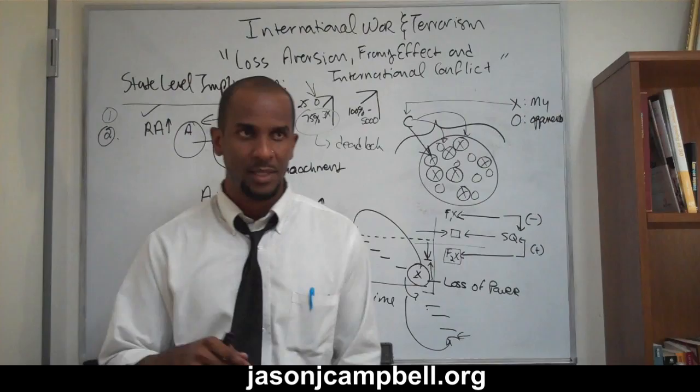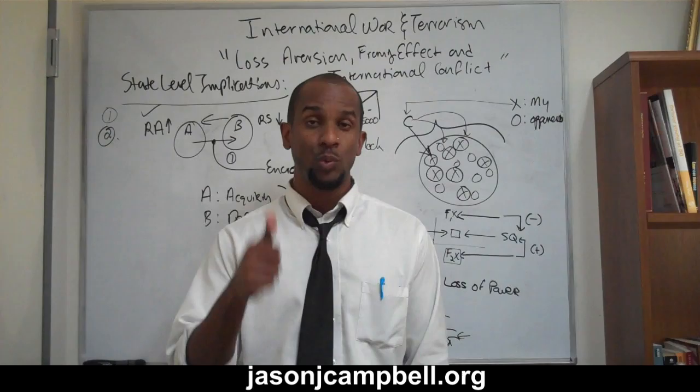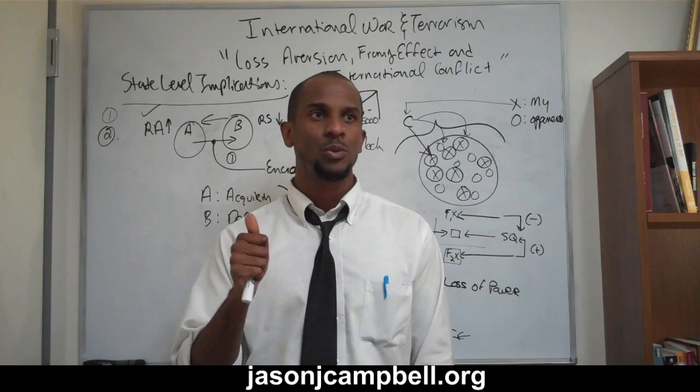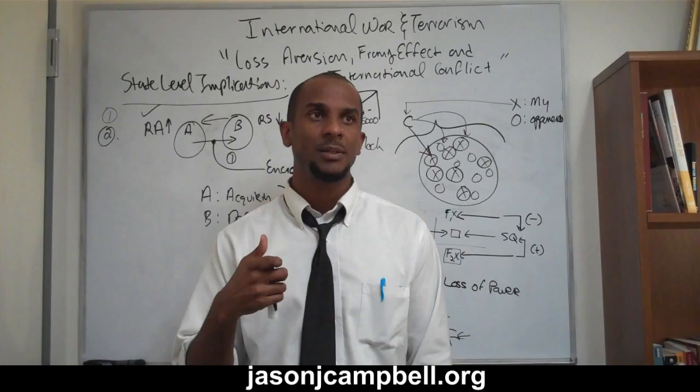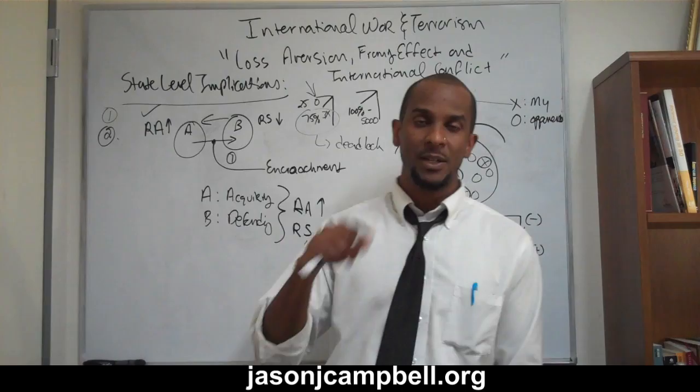How does it apply to the individual? Individuals are risk-averse with respect to gains. What does that mean? If you can guarantee me something, it's more likely that I'll go for the guarantee rather than risk anything, generally speaking. Individuals are risk-seeking with respect to losses. What does that mean? It means if there is a likelihood that I will definitely have to relinquish something, then it's more likely that I'll attempt to relinquish far more and preserve what I already have. So I'll be risk-seeking with respect to losses.